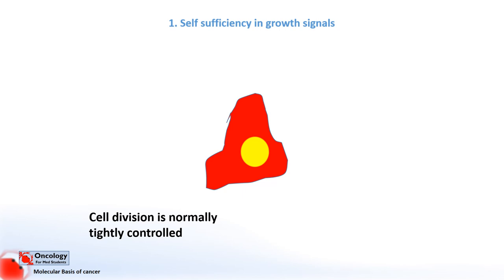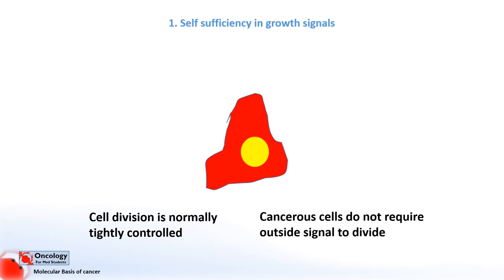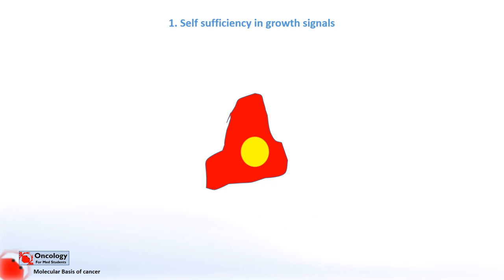Cells normally need signals from other cells to tell them when to divide. When cells break free of these controls and start dividing even when they are not getting these signals, they begin to divide uncontrollably and neoplasms, also known as tumours, result. In normal cells, cell division is controlled by substances called growth factors. Growth factors are hormones in the form of proteins that are released by cells as a way of signaling to other cells nearby that it's okay for them to divide.